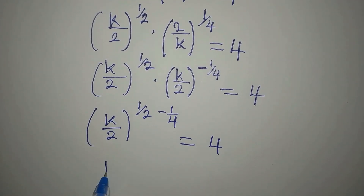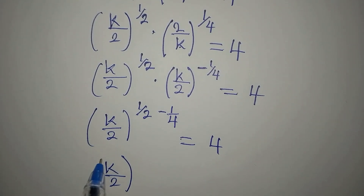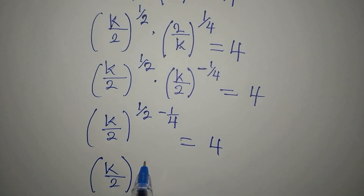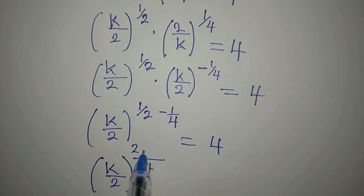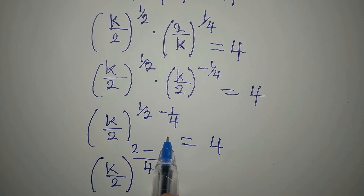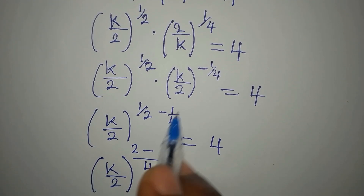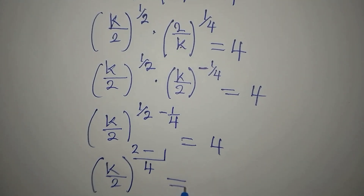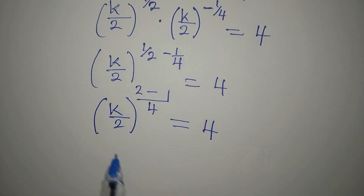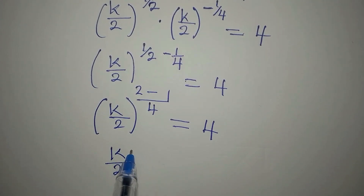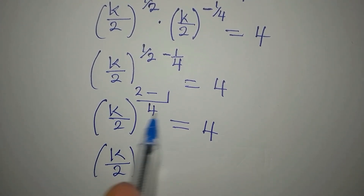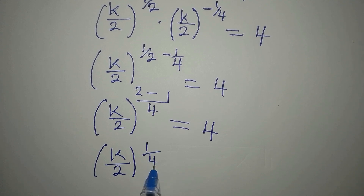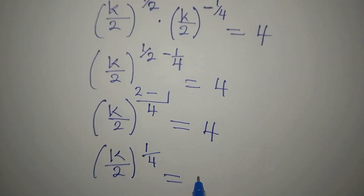Continuing, the sum of the powers is 1/4. Four divided by 2 is 2 times 1 is 2; 4 divided by 4 is 1 times 1 is 1. So 1/2 minus 1/4 equals 1/4. We now have (k/2)^(1/4) = 4.